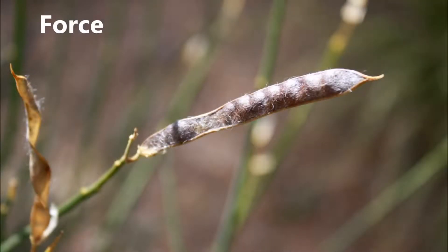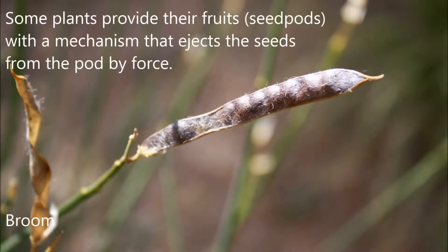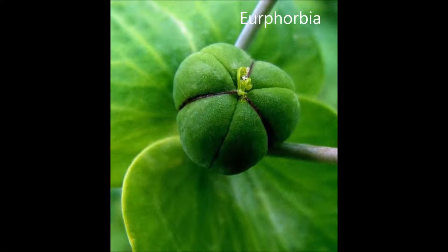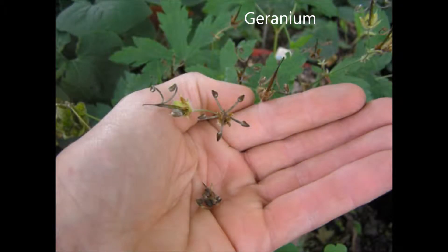Dispersal of Seeds by Force. Some plants propel their fruits and seed pods through a mechanism that ejects the seeds from the pods by force. There are several methods plants use to fling their seeds out of their seed pods. All of them rely on the effect of evaporation of water in the seed pods, so this method of seed dispersal mainly takes place in the sun. The plants that disperse seeds by this method include broom, euphorbia, and geranium.